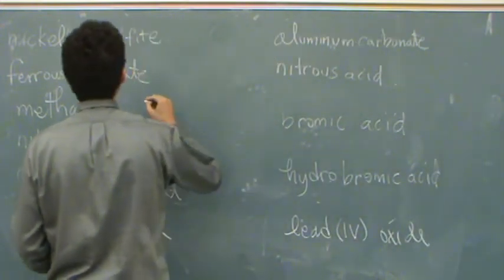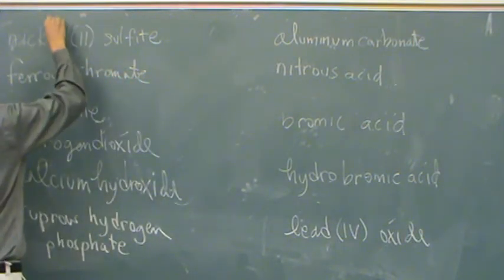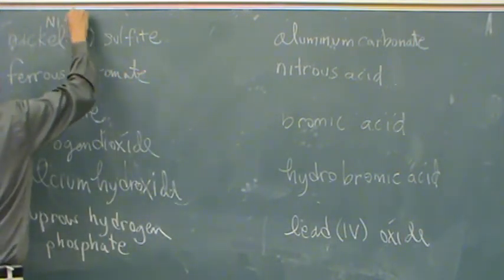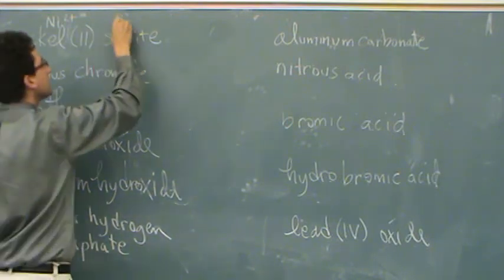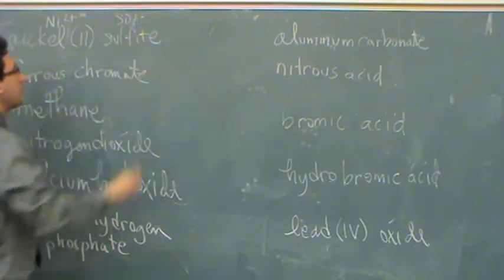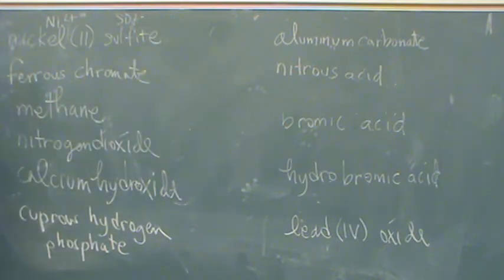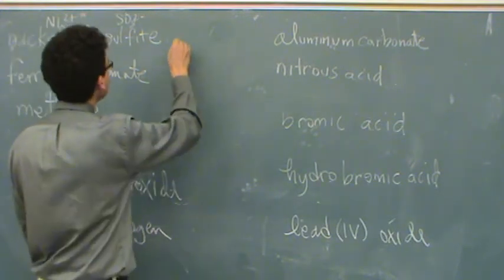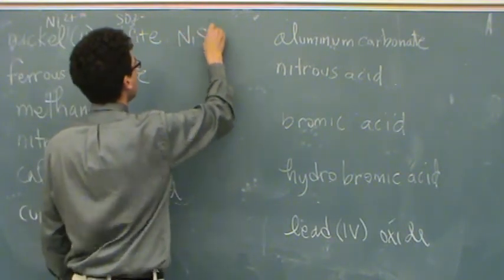Nickel(II) sulfite. If you're going backwards, it's kind of easier if you go, okay, nickel 2+, sulfite SO3 2-. Sulfite, SO4 would be sulfate. So they just go together nicely, NiSO3.